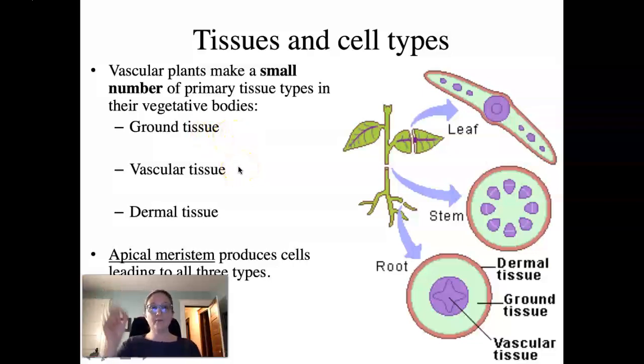vascular tissue, which are the vessels and tubes that move water and sugars around the plant, and dermal tissue, which tends to be a thin layer of cells on the external portions of the plant. And again, the apical meristem produces cells that lead to all three of these types.